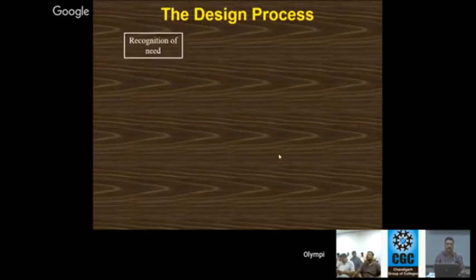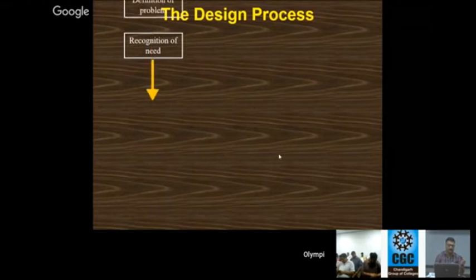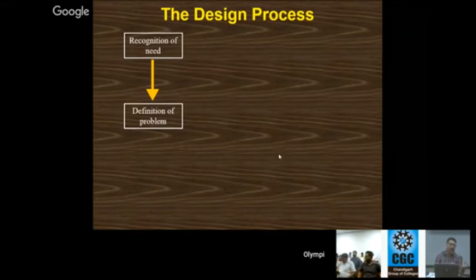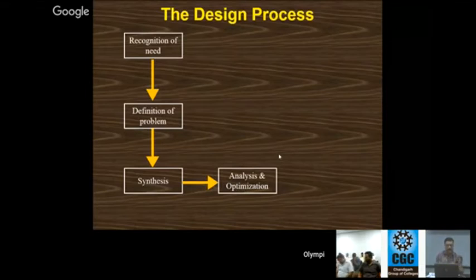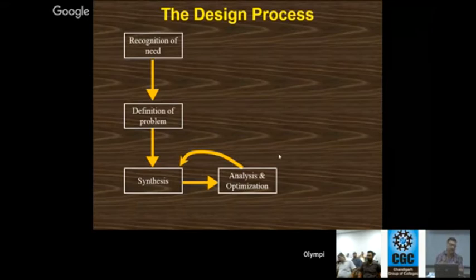The design process steps are: first, recognition of need — what is the need for that particular product? Second, definition of problem — if you find the need, you define the particular product, its use, and why it is being developed. Third is synthesis. Fourth is analysis and optimization — whatever parameters are used for optimizing the machining are analyzed and optimized. If the optimization and analysis are not at the desired level, it comes back to synthesis again for proper synthesis, then feeds back to analysis and optimization.